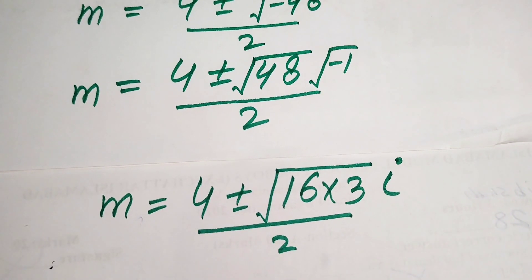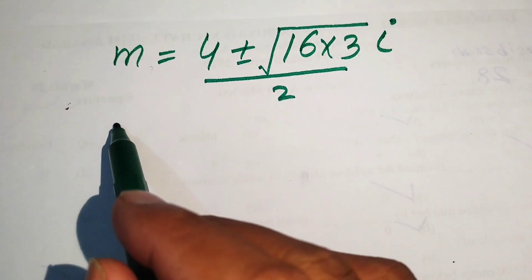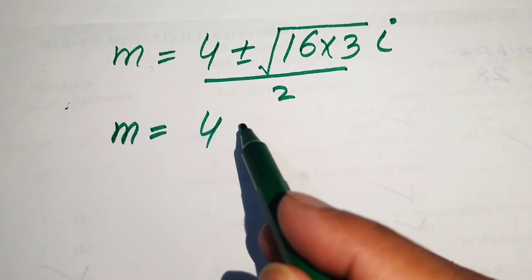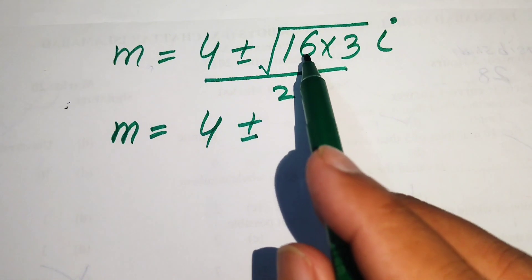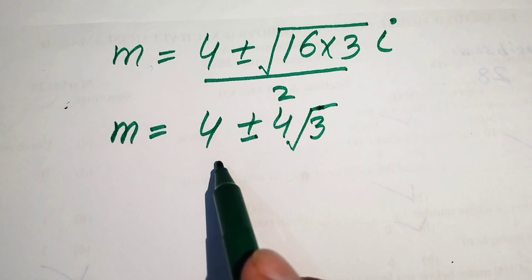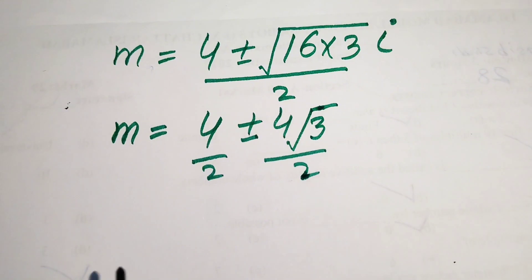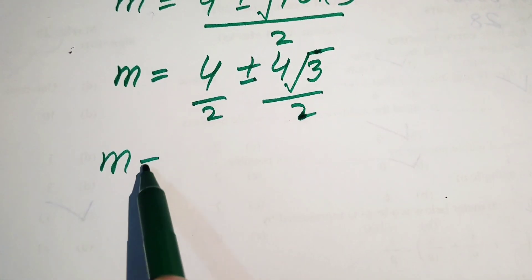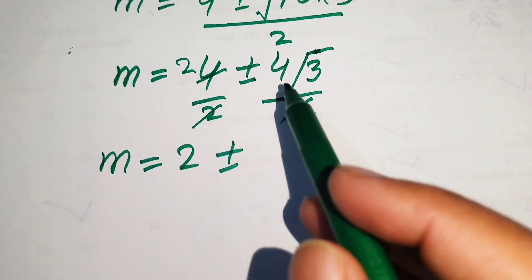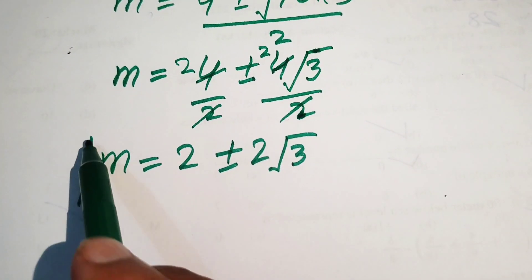We apply the square root sign separately: square root of 16 equals 4, leaving 4 times square root of 3 times iota. Breaking the fraction, we divide each term by 2: 4 divided by 2 gives 2, and 4 divided by 2 gives 2. So m equals 2 plus or minus 2 square root of 3 times iota.